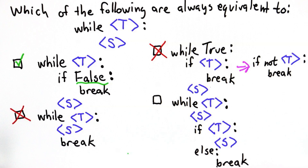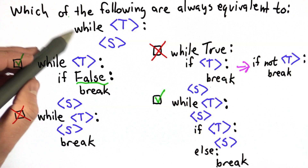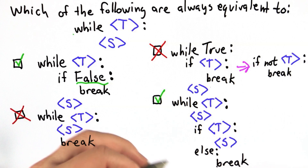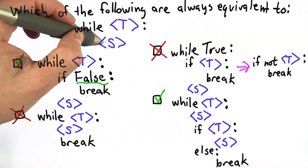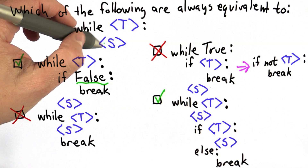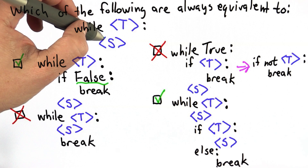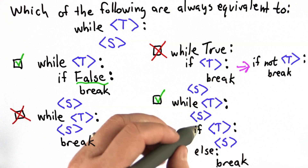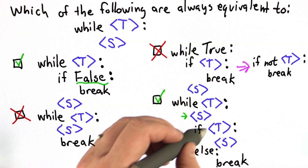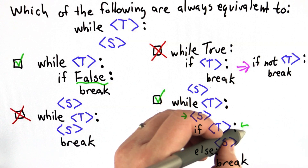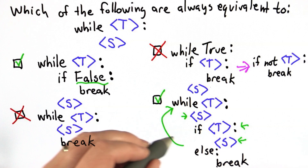The final one is the most complicated, and this one is actually always equivalent to the original loop. If we think through the execution: in the original loop, if the test condition is true, we execute statement s, then we keep going. If the test condition is true a second time, we execute s again and keep going. Looking at this version, if the test condition is true we execute s, then if the test condition is true again we execute s and keep going. So that has the same behavior.